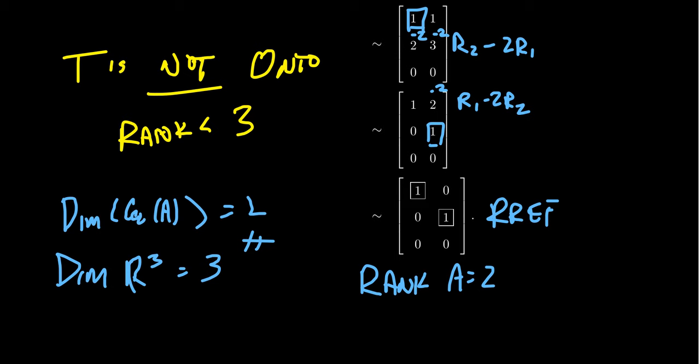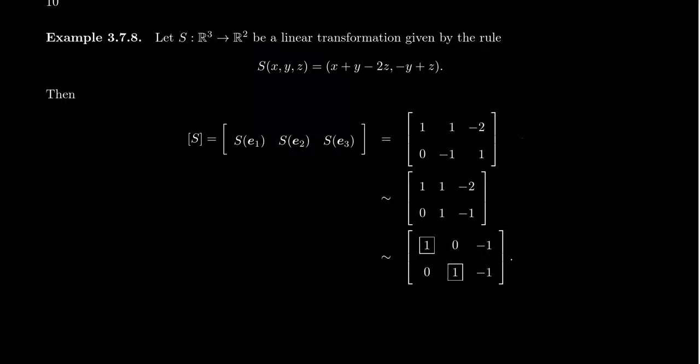This is comparable to what we saw with 1-to-1 linear transformations: a map is 1-to-1 if the nullity is 0, and not 1-to-1 if the nullity is greater than 0. When it comes to onto, you look at the rank. If the rank is full, it'll be onto. If there's a deficit in the rank, it's not onto.